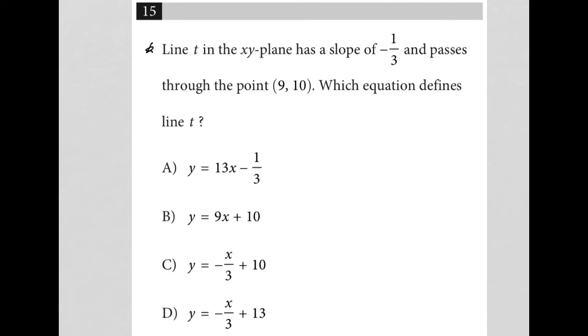This question says line T in the xy plane has a slope of negative one-third. I'm going to write m equals negative one-third, and it passes through the point nine-ten, so it also goes through the point nine comma ten.